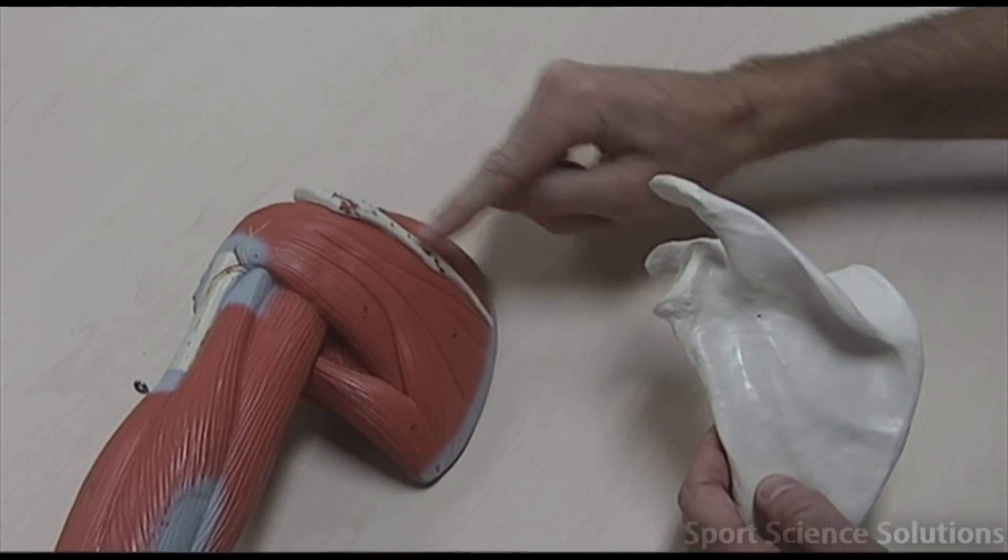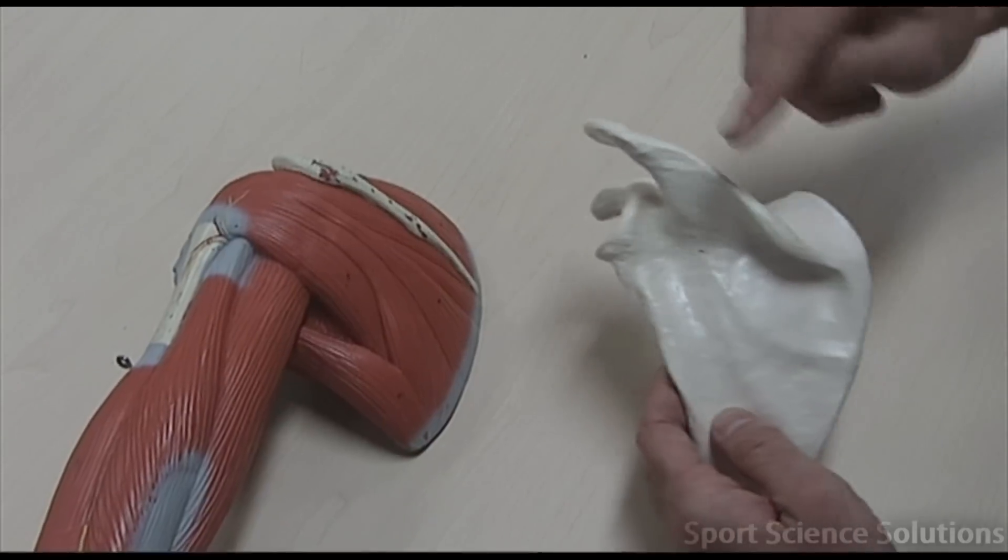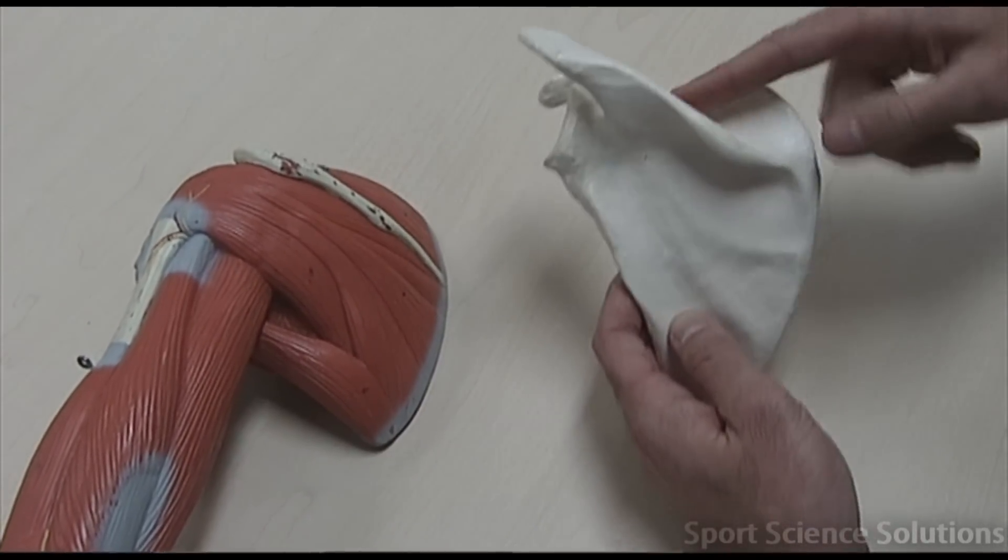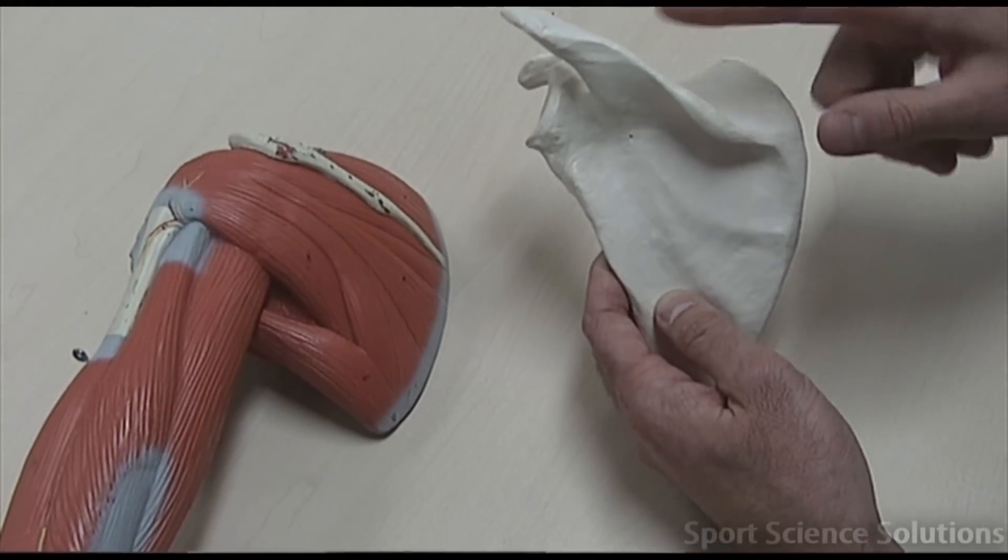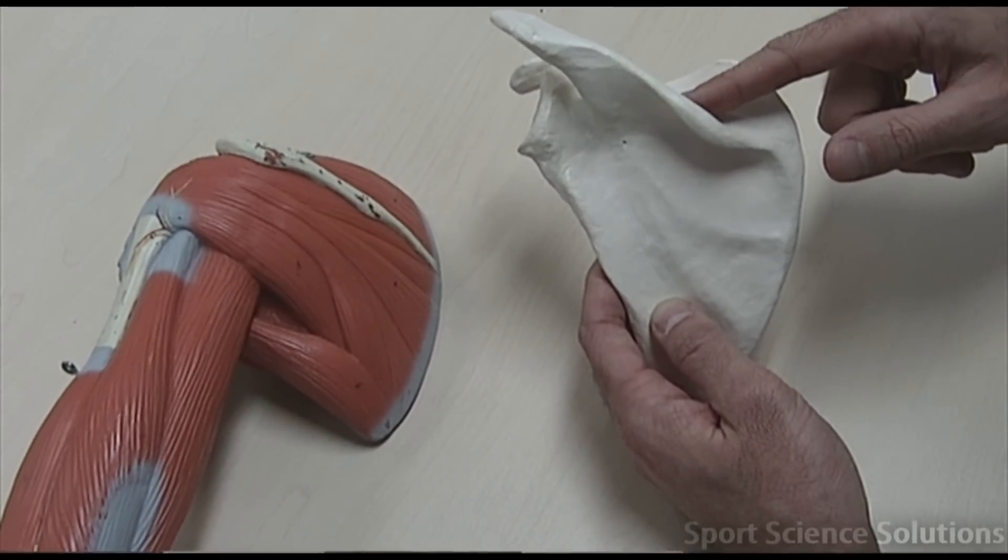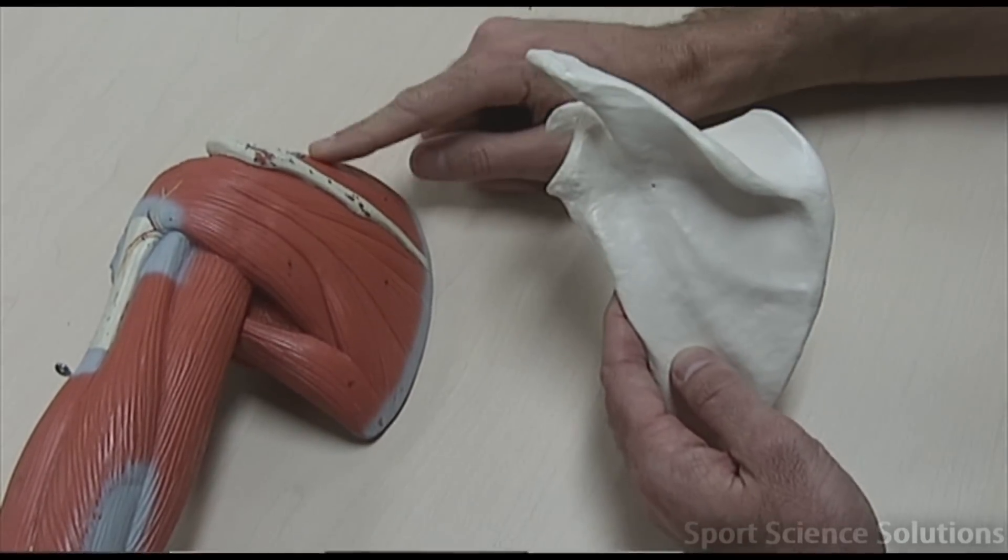The scapula spine, which we saw on the arm here, that's what we're looking at here. The muscle above the spine was called the supraspinatus. As it turns, the section above the spine is called the supraspinatus fossa, which happens to be the origin for the supraspinatus muscle.